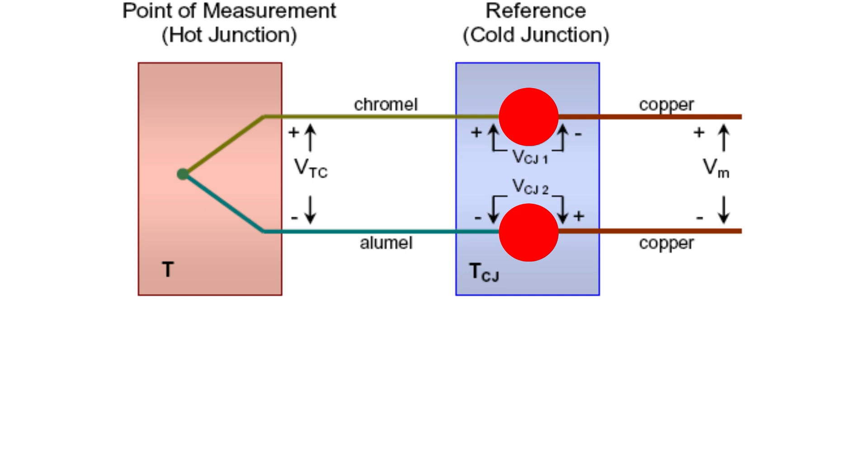Either a precision RTD or thermistor is used to measure the temperature at that point. The electronics of the system determine the temperature at this point and then compute the voltage that a thermocouple would make from the ice point to that temperature.